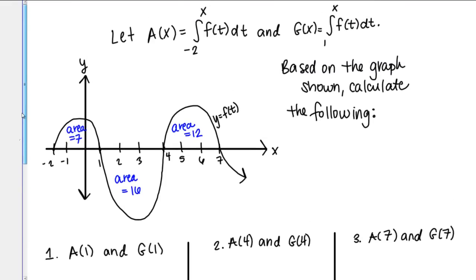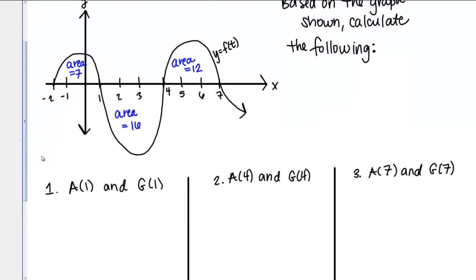Remember A of X equals this expression here, the integral from negative 2 to X of F of T DT. If I'm calculating A of 1, then I'm plugging in 1 for X. Then that's going to become the integral from negative 2 to 1 of F of T DT.